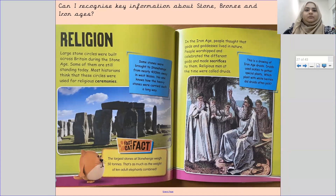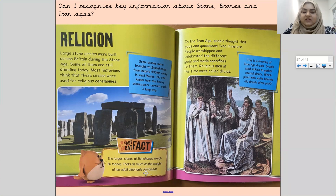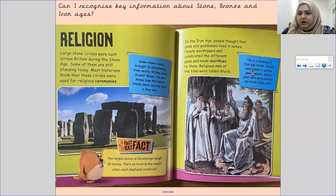Large stone circles were built across Britain during the Stone Age and some are still standing today. Most historians think that these circles were used for religious ceremonies. Some stones were brought to Stonehenge from nearly 400 kilometres away in West Wales — no one knows how the heavy stones were carried such a long way. The larger stones at Stonehenge weigh 50 tonnes, as much as 10 adult elephants combined. In the Iron Age, people thought that gods and goddesses lived in nature. People worshipped and made sacrifices to them, and religious men at the time were called druids — druids used sickles to gather special plants.